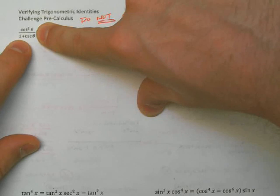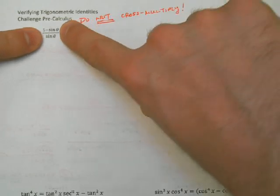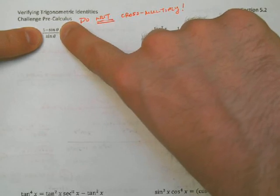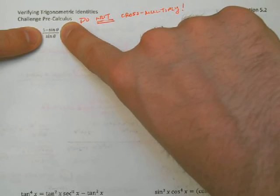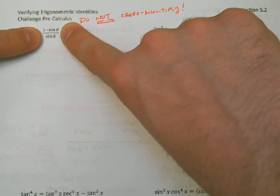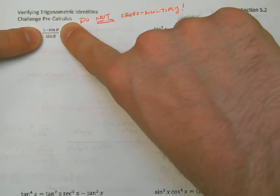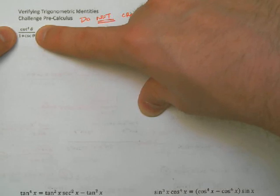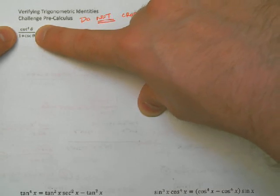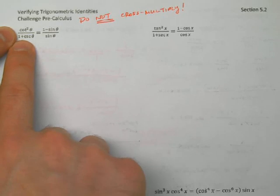In order to work with one side at a time, I need to know how to break this apart. Because I see cotangent squared, I'm going to try the Pythagorean identity: 1 plus cotangent squared of theta equals cosecant squared of theta. That means cotangent squared by itself must be cosecant squared of theta minus 1. So I'm going to replace the left side with cosecant squared of theta minus 1 on top and 1 plus cosecant theta on the bottom, equal to 1 minus sine theta over sine theta.